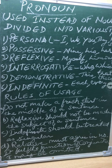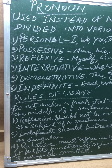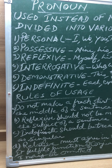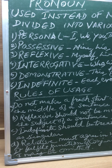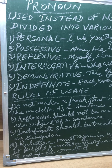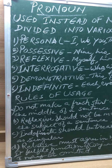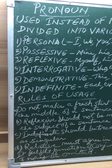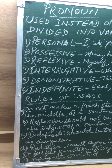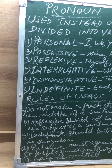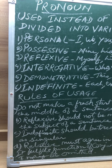A relative pronoun fulfills the purpose of a conjunction also. Therefore, no conjunction should be placed before it. For example: 'He offered me a drink and which I refused' — 'and' is not required. The correct form is: he offered me a drink which I refused.